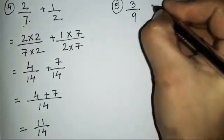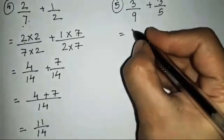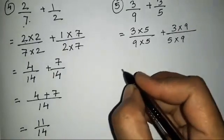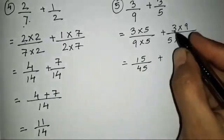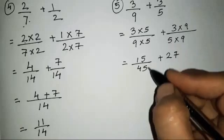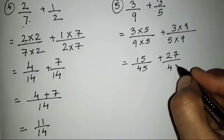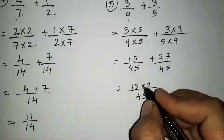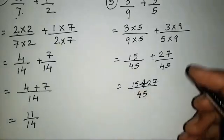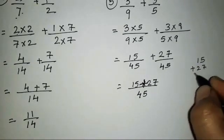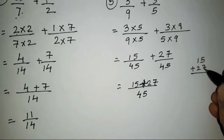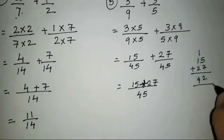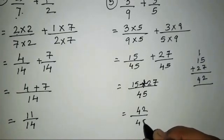The fifth sum is 3/9 plus 3/5. Again, different denominators, so we multiply them with each other: 3×5 = 15 over 9×5 = 45, plus 3×9 = 27 over 5×9 = 45. Adding 15 plus 27, the answer is 42/45.